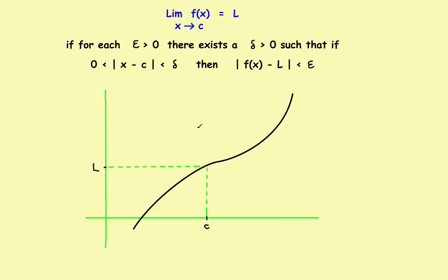In this video we'll take a look at what's called the formal definition of limits, or the epsilon-delta definition. It reads like this: the limit of f of x as x approaches c is equal to L if, for each epsilon greater than 0, there exists a delta greater than 0, such that if the absolute value of x minus c is less than delta, then the absolute value of f of x minus L is less than epsilon. This definition generally causes students a lot of confusion, mainly because of the notation and what it all means. So what we'll do in this video is go through each part of it and explain what each section means. Then in the next video we'll use the epsilon-delta definition to actually prove that a limit exists.